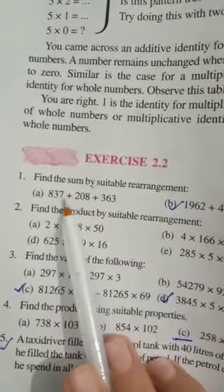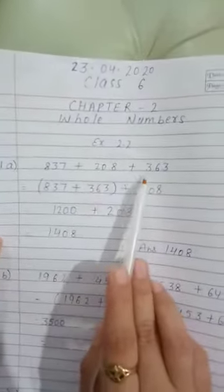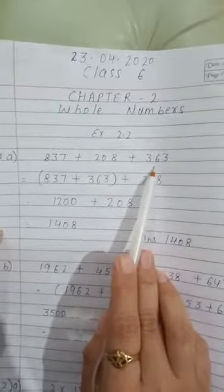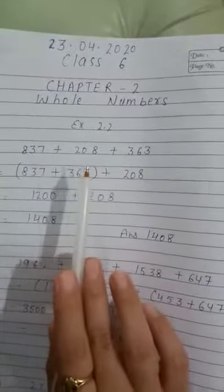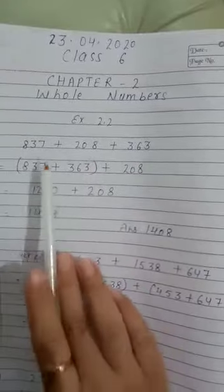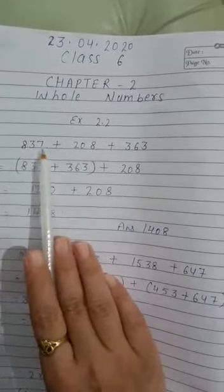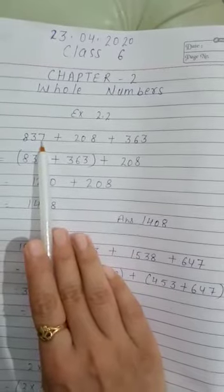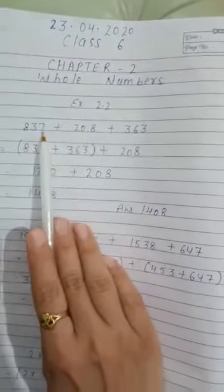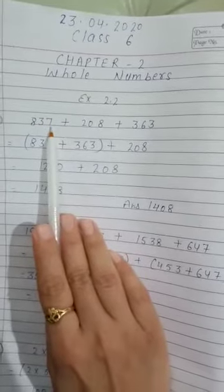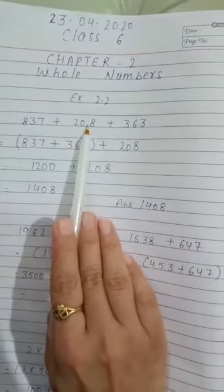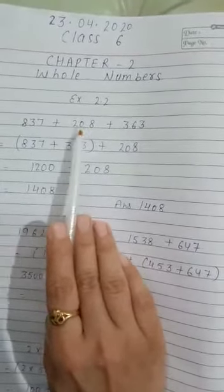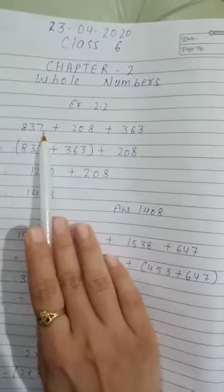These are the 3 numbers. So see, the solution is we have 837 and 208, 363. Now here students we will try to make our 1s place as 0. So what you will do here, we will try by taking 2 numbers together. First of all we are taking 837 plus 208. When you add its 1s place we have 7 plus 8, it is 15. It means we want here 0 but its 1s digit is 5.